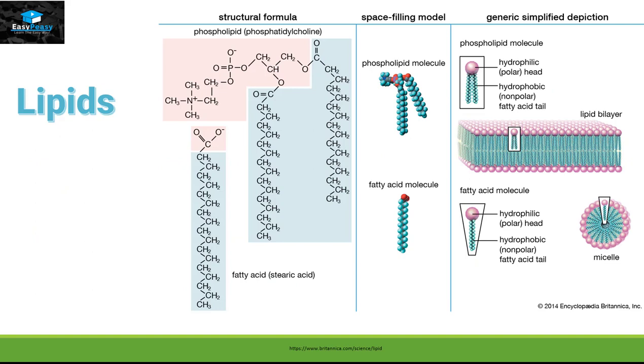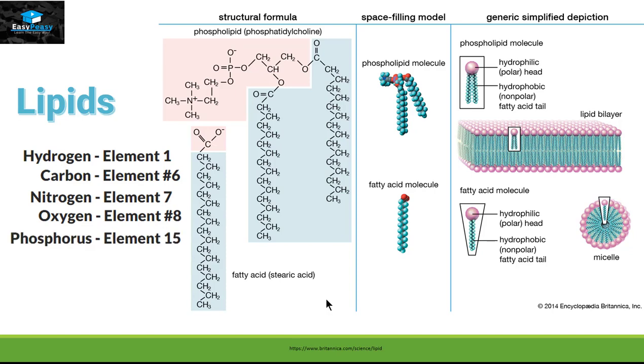Last but not least, lipids. As you can see in this picture, lipids are made up of phospholipids and fatty acid molecules. If we look at the structure of the fatty acid molecules and the phospholipid, we can see they are made up of elements like hydrogen, carbon, nitrogen, oxygen, and phosphorus.